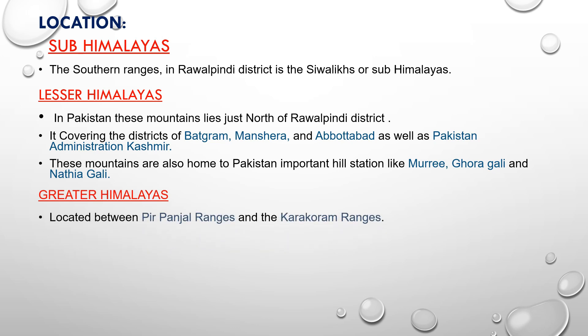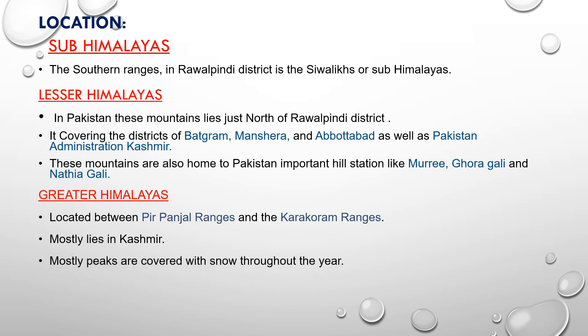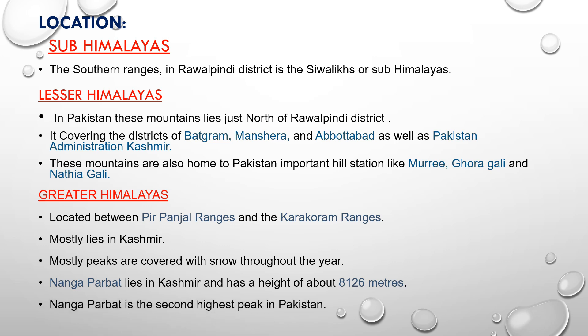Greater Himalayas are located between the Pir Panjal Range and the Karakoram range. Greater Himalayas lie in Kashmir and their peaks are covered with snow throughout the year. In Kashmir there is a mountain called Nanga Parbat, with a height of 8,126 meters. Nanga Parbat is the second highest peak in Pakistan, while K2 is the highest peak in Pakistan.